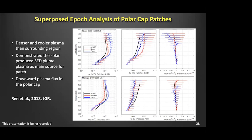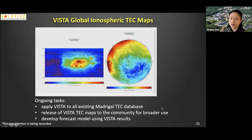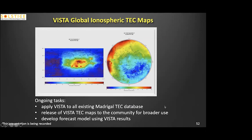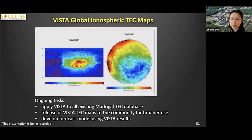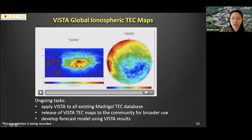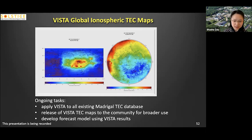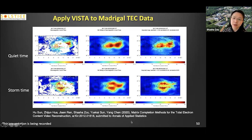There is a question from Sylvia asking whether the TEC model is public. The MAGical data is publicly available — we obtained it from the MAGical database. The VISTA model was just developed at the end of last year, and the manuscript describing this method has been submitted to Annals of Applied Statistics. We will refine the model and release the data to the community — the short answer is the data is not yet available, but we will publish it in the future, hopefully by the end of this year. If you have a particular event you are interested in, you can contact us.